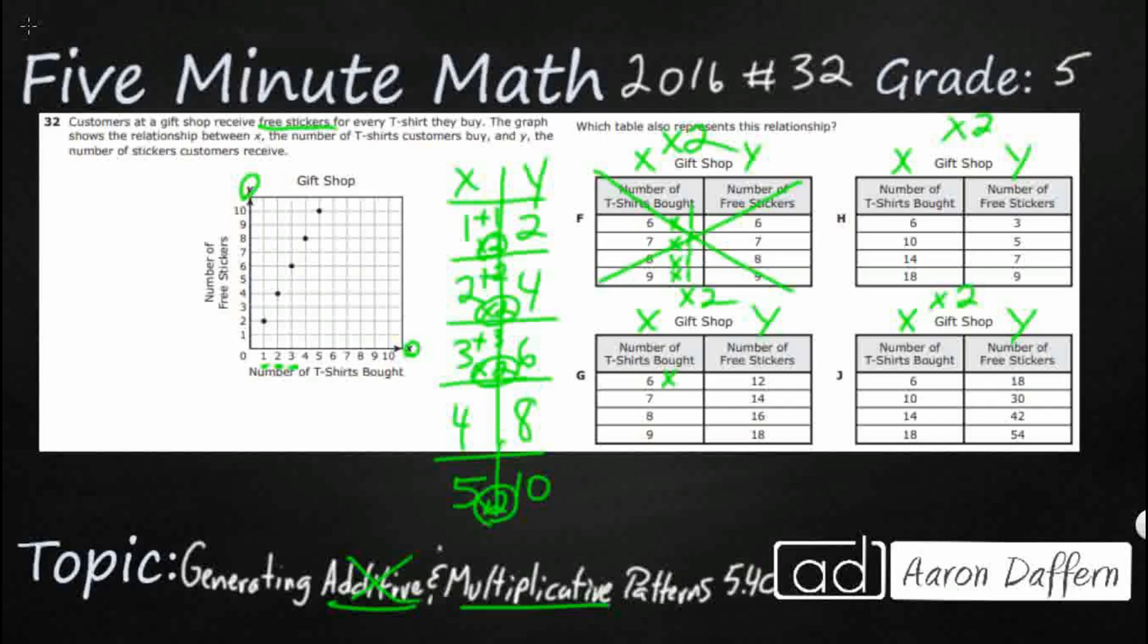G, double 6, you get to 12. That's good. Double 7, you get to 14. That's good. Double 8, you get to 16. And double 9, you get to 18. Okay, I'm thinking g is probably it.